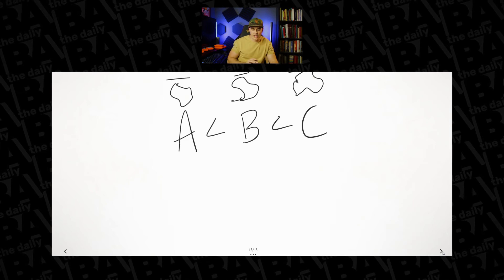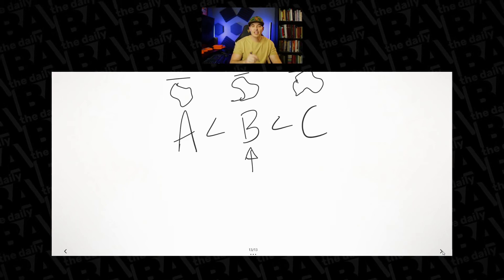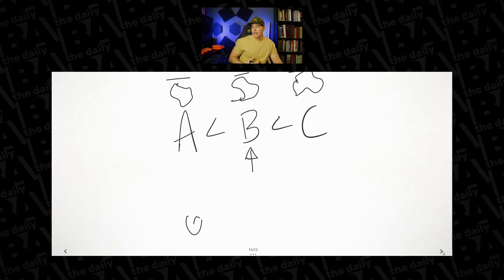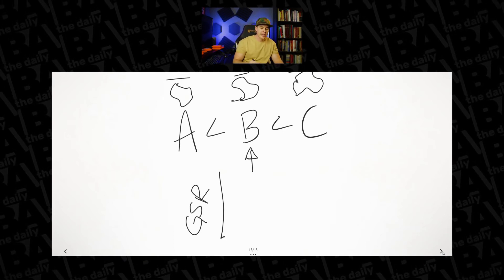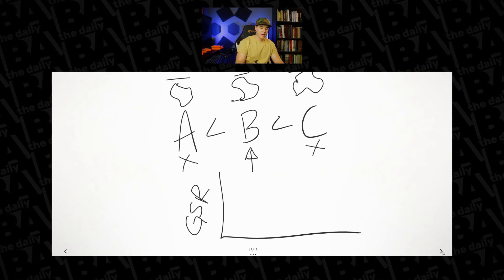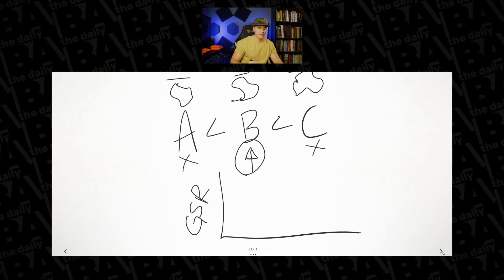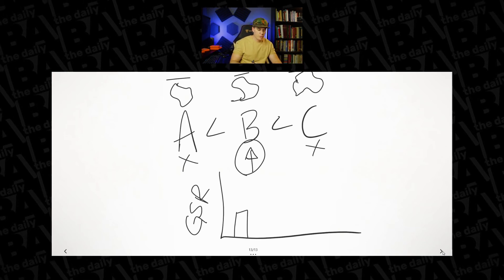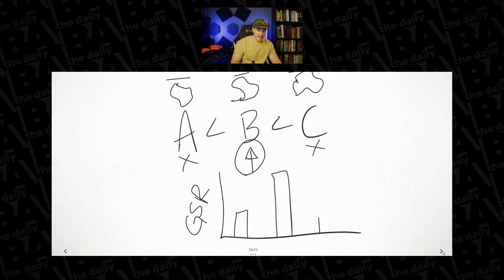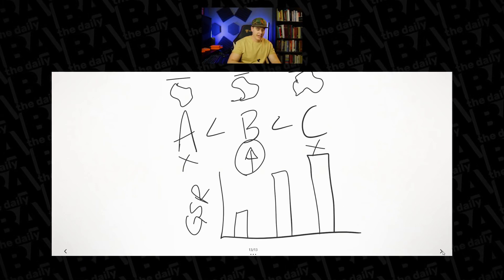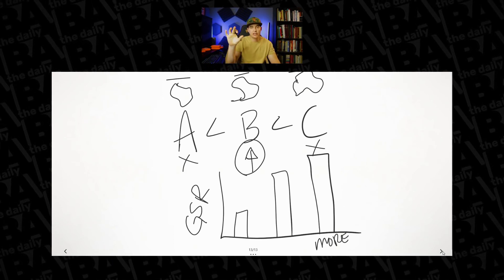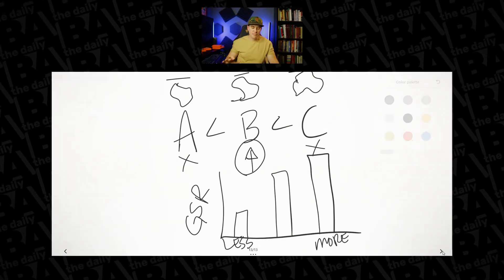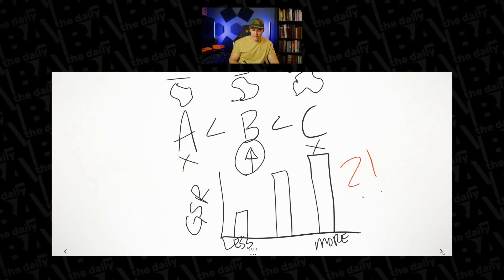The researchers provided a mild shock to B and measured the conditioned emotional response — that is the galvanic skin response, how much you sweat, along with increases in heart rate and blood pressure. Note that shock never happened on A or C — only on B. When they presented the A stimulus and the C stimulus and measured the galvanic skin response, they found that because of that past history, there was actually more of a galvanic skin response in the C condition than in the A condition, without ever experiencing shock on C or A.